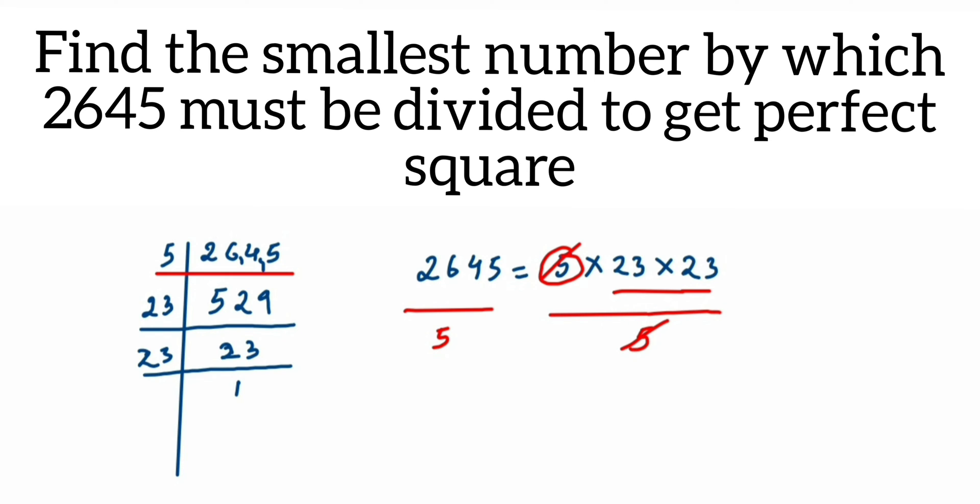We get 529 again. So 529 is equal to 23 × 23. This is what we got after cancelling.